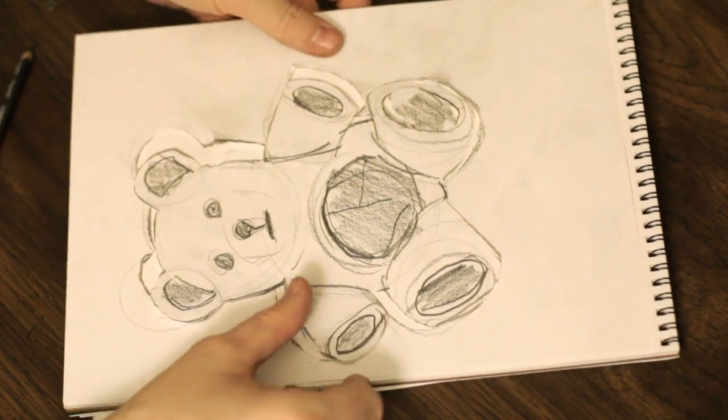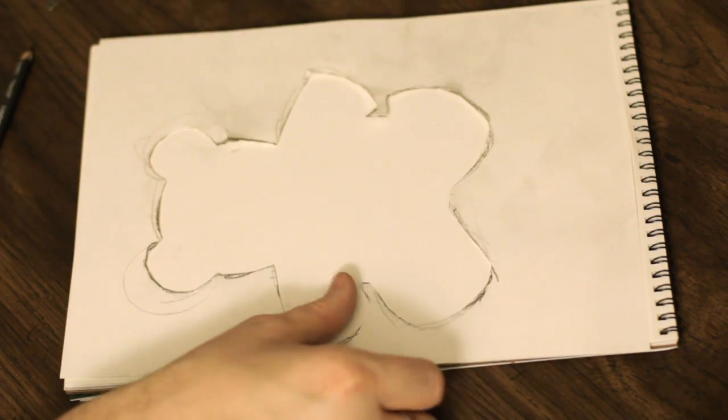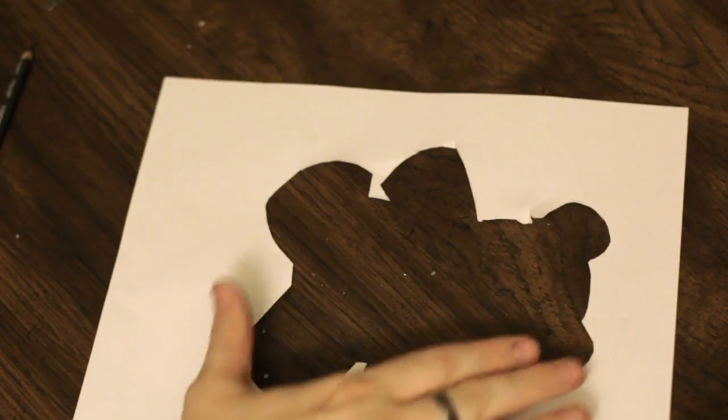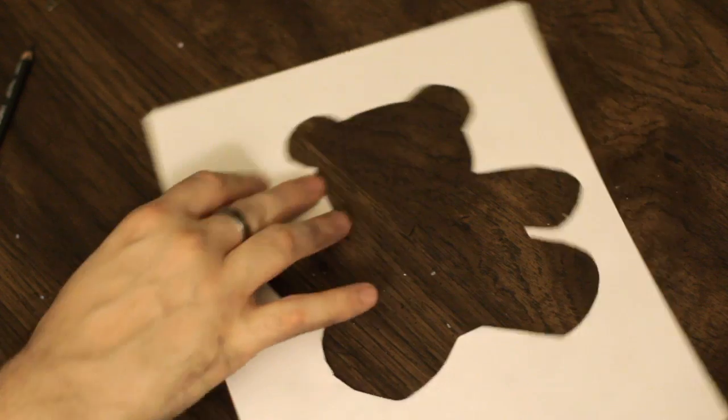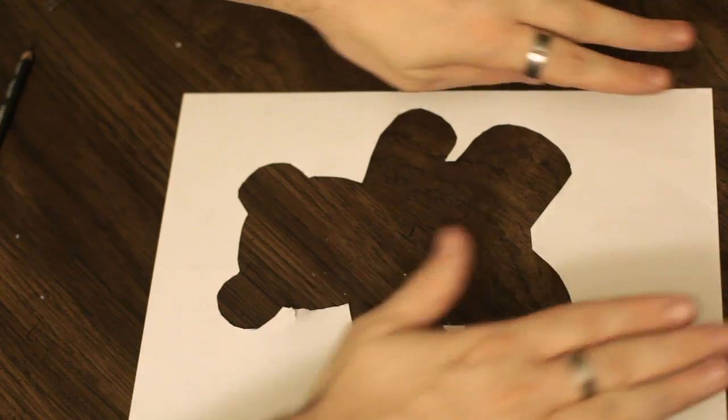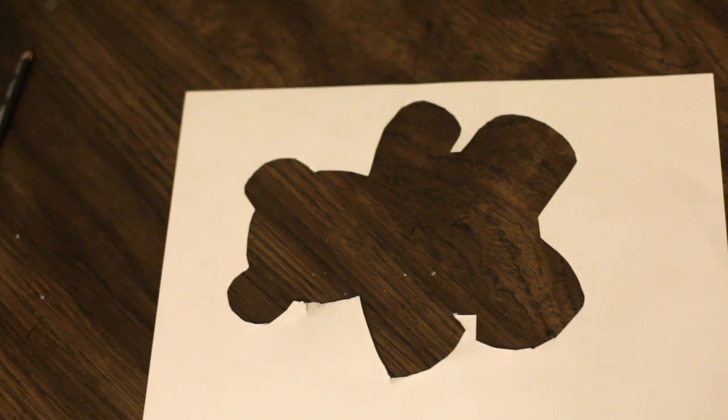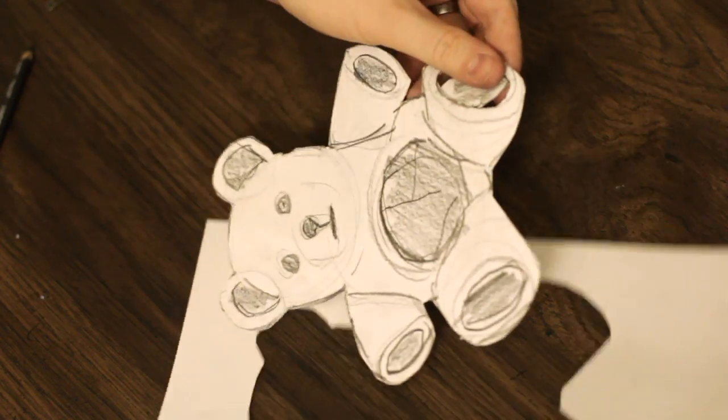So we want to cut the teddy bear out of the original paper. Here we've cut the teddy bear out, and we're going to use this part and put the paper against the wall in your nursery, tape it down, and spray paint a solid brown teddy bear color.